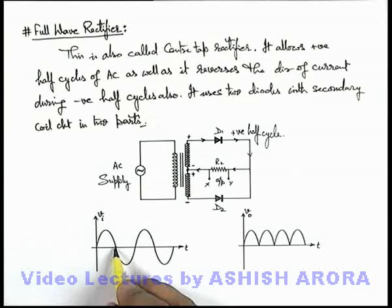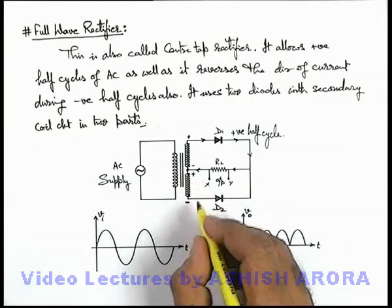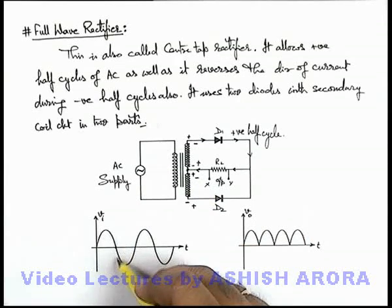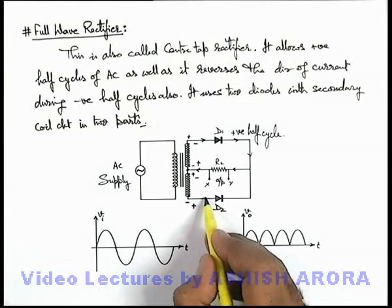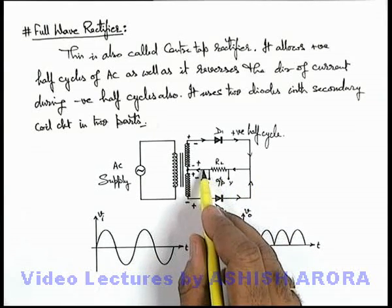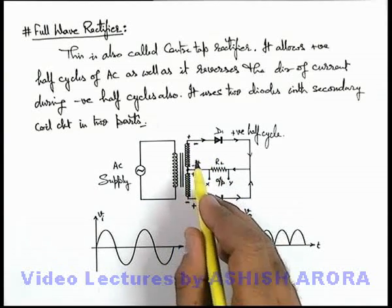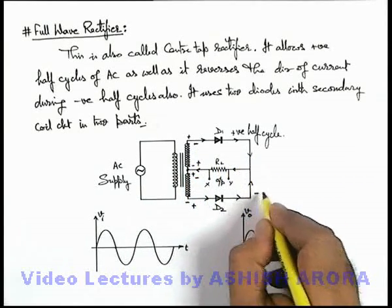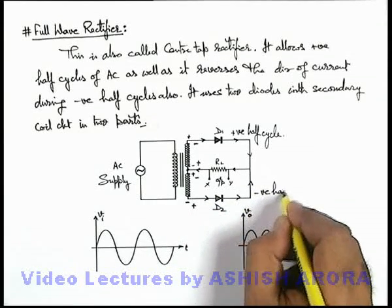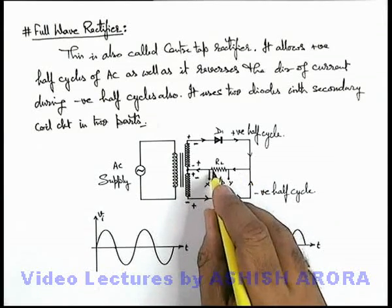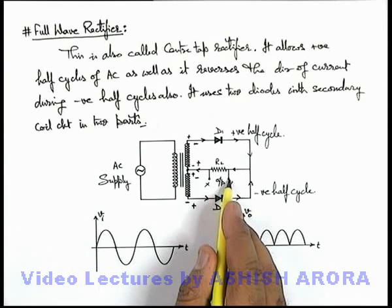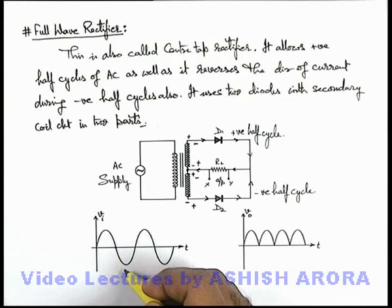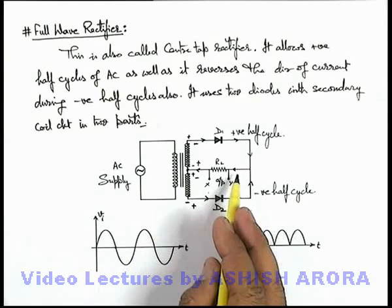When the next half cycle comes, the polarity across the secondary coil reverses — this will become plus, this will be minus; correspondingly here it is plus, here it is minus. In the negative half cycle, diode D2 will be forward biased and current flows through it, passing through the load resistance. Diode D1 will become reverse biased because this end of the secondary coil is at low potential, so no current passes through it in the negative half cycle. Diode D2 is acting in the negative half cycle, but it is also supplying current through the load resistance in the same direction, so terminal Y is at high potential and X is at low potential. Whether the input supply is having its positive half cycle or negative half cycle, in both situations current flows through the load resistance in the same direction.